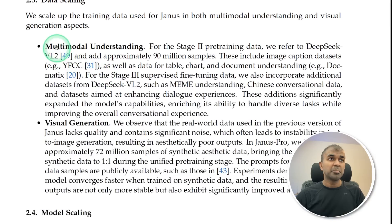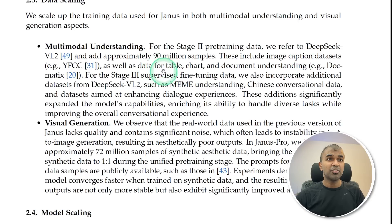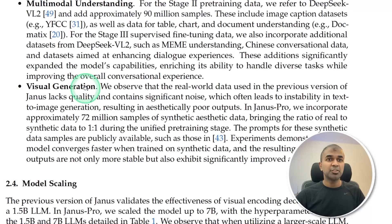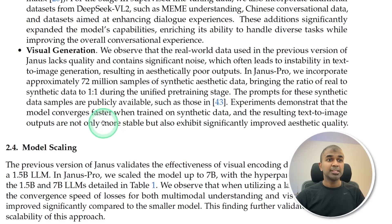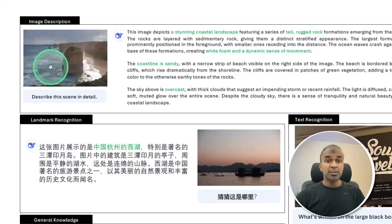For multimodal understanding, they used DeepSeek VL2 and approximately 90 million samples, including image caption datasets and data for table, chart, and document understanding. For visual generation, they incorporated 72 million samples of synthetic aesthetic data. The model converges faster when trained on synthetic data, and the output shows stable and improved aesthetic quality.